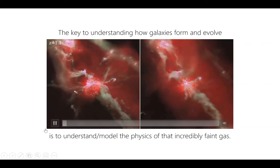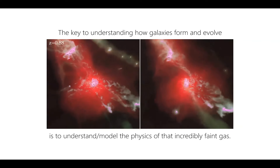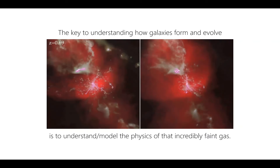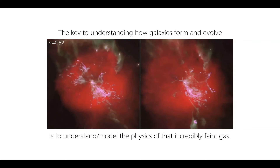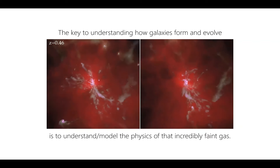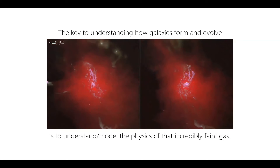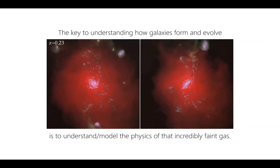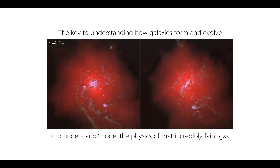It's a major observational challenge to observe this gas, but we really want to because we want to understand how galaxies form. Here's a zoomed-in simulation of a galaxy forming — you're seeing gas flowing in from the cosmic web from two angles. As the gas flows in you see explosions from supernovae feedback, but the gas keeps flowing, building up rotation in the center, eventually forming a galactic disc like Andromeda or the Milky Way. It's a very complicated, messy process.